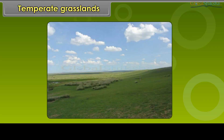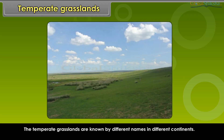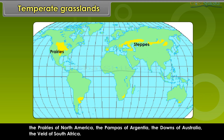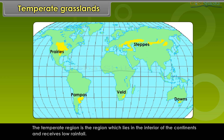The Temperate Grasslands are known by different names in different continents. They include the steppes of Eastern Europe and Southern Asia, the Prairies of North America, the Pampas of Argentina, the Downs of Australia, and the Veld of South Africa. The Temperate Region lies in the interior of the continents and receives low rainfall.